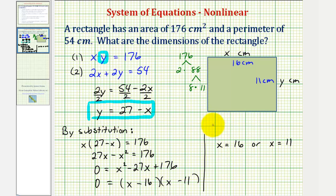Therefore, the dimensions of the rectangle are 16 centimeters by 11 centimeters. A rectangle with these dimensions has an area of 176 square centimeters and a perimeter of 54 centimeters.